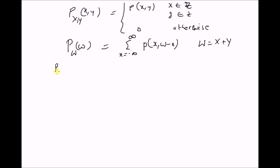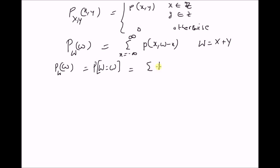By definition, the probability mass function of a random variable W at w equals a given value of w should be equal to the sum of the joint mass function at all values of x and y that map to this value of w.